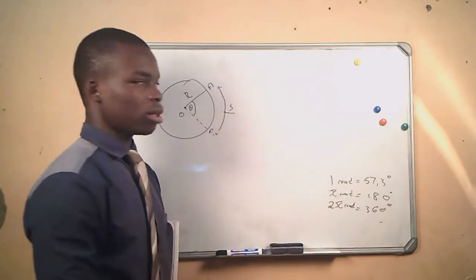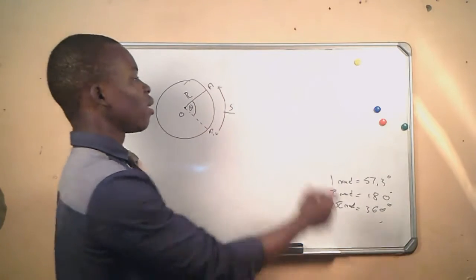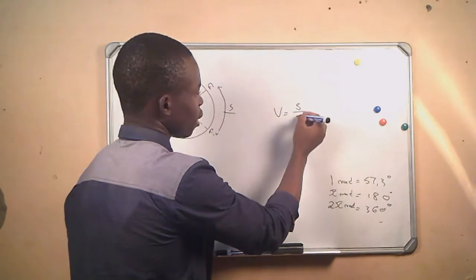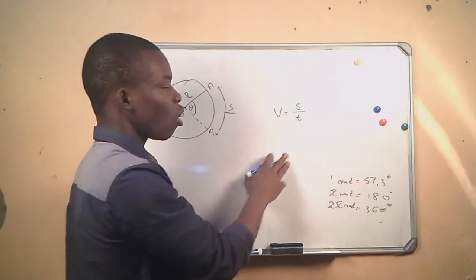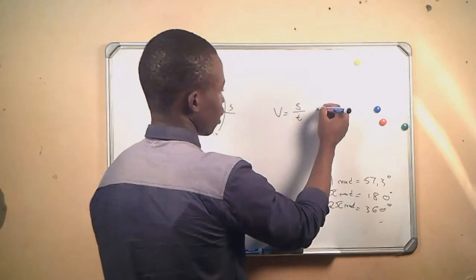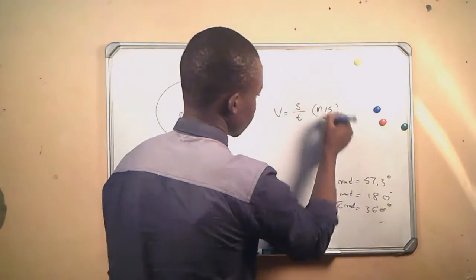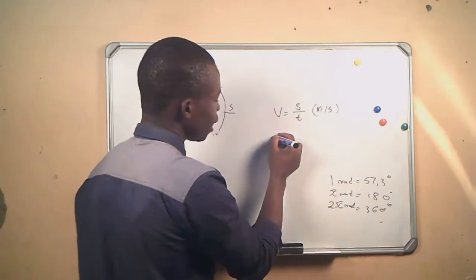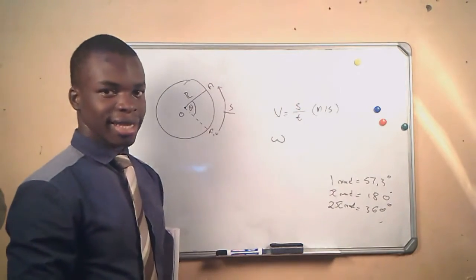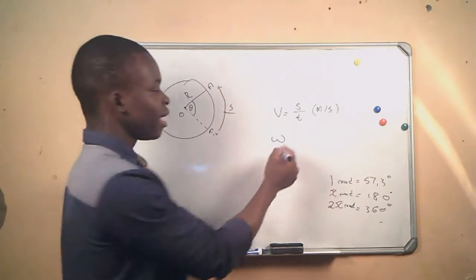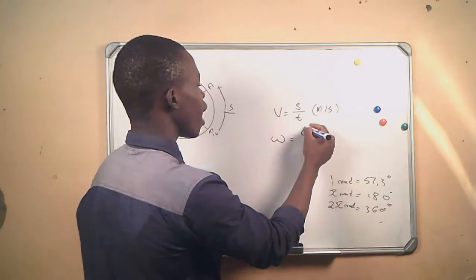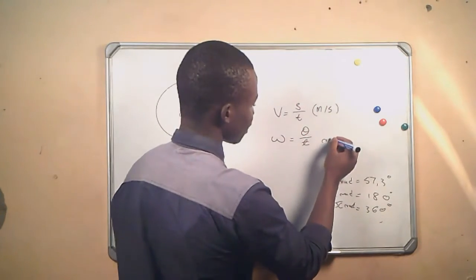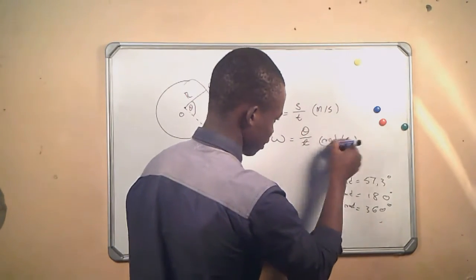Since we are dealing with motion, there is velocity. We know that linear velocity is given by s divided by t — the rate of change of displacement — with SI unit meters per second. For angular motion, we have angular velocity, represented by omega (ω). It is the rate of change of angular displacement: θ divided by t, with SI unit radians per second.